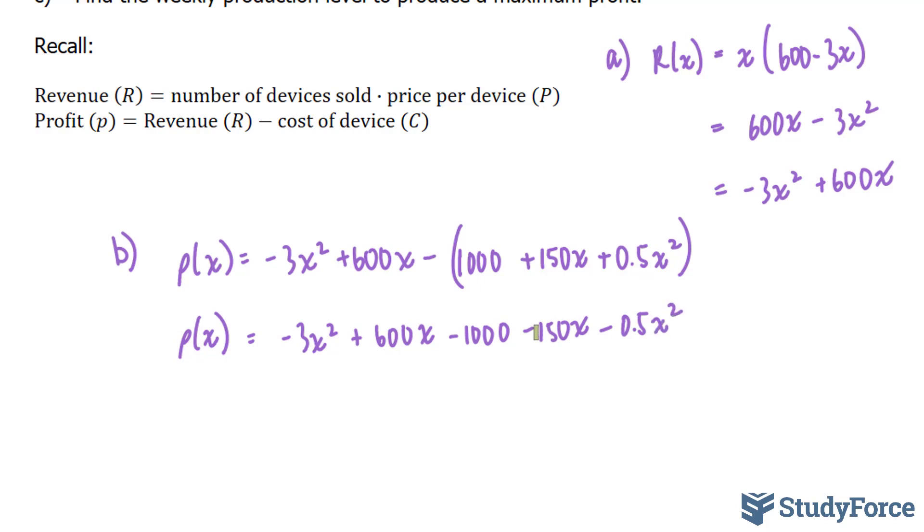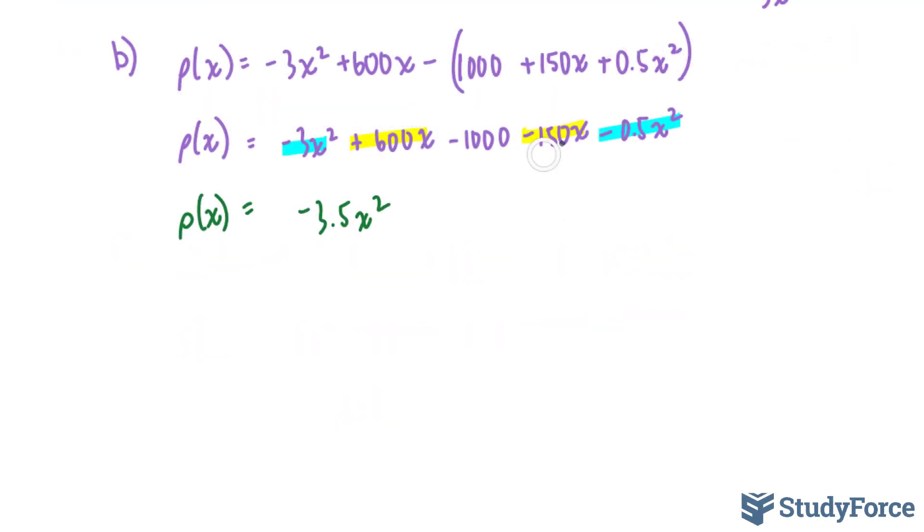You'll notice now that this and this term are alike. This term and this term are alike. So we're going to combine them, where we end up with -3.5x squared. Combining these terms, we end up with plus 450x and the minus 1,000. The next step is to find the critical points. And to do that, we first have to find the first derivative of this function and then set it equal to 0. So it's two steps. Let's go ahead and do that.